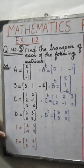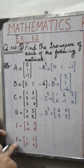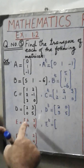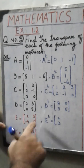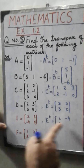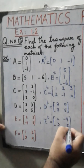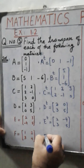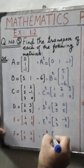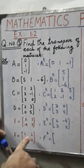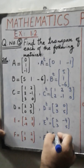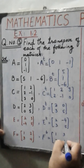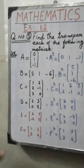Similarly, the transpose of matrix E is equal to 2, 3, and minus 4, 5 — this is the second row becoming the second column of the transpose of matrix E. Next, part F: the transpose of matrix F — the elements 1, 2 are in the first row, interchanged into a column, giving 1, 2 and 3, 4 written as columns.